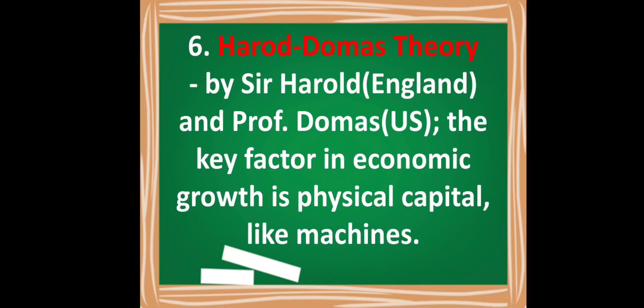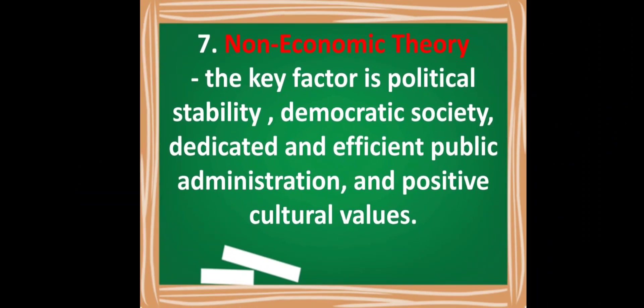The sixth theory is the Harrod-Domar theory, by Sir Harold from England and Professor Domar from the U.S. For them, the key factor in economic growth is physical capital, like machines.